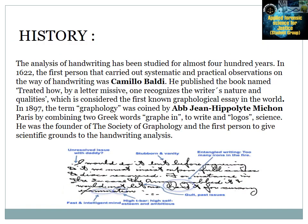The analysis of handwriting has been studied for almost 400 years. In 1622, the first person to carry out systematic observation on handwriting was Camillo Baldi, who published a book named 'Trattato come da una lettera missiva si conoscano la natura e qualità dello scrittore,' considered the first known graphological essay in the world. In 1897, the term 'graphology' was coined by Abbé Jean-Hippolyte Michon in Paris, combining two Greek words: 'graphen,' meaning to write, and 'logos,' meaning science. He was the founder of the Society of Graphology and the first person to give scientific grounds to handwriting analysis.